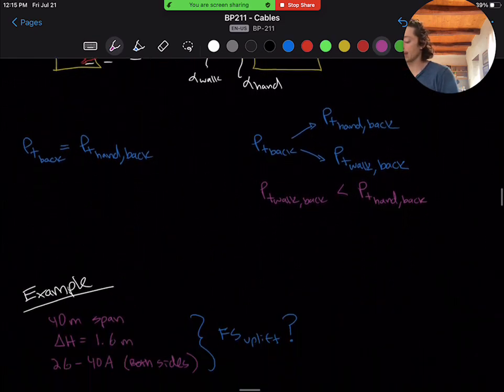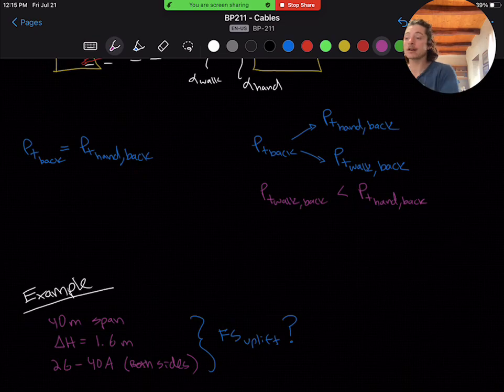Now, let's get started with an example. Consider a 40 meter bridge with a maximum delta H of 1.6 meters that uses the two tier or 2G40A abutment on either side. Using the tier one calculations taught in the basic design course, what would you get for the factor of safety for uplift on the high side?